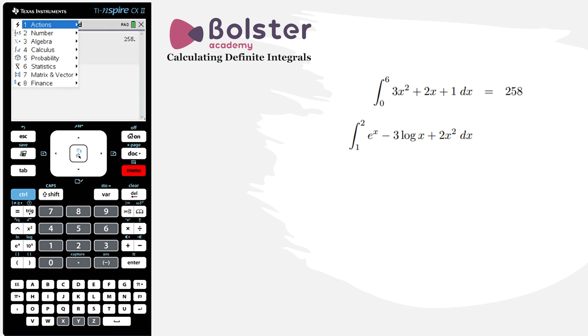Hit menu, hit option number 4, calculus, option number 2, numerical integral. And I just fill in all the information we need to fill in. My lower limit is 1, upper limit is 2, and now I just have to input the actual function.